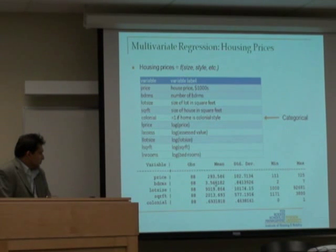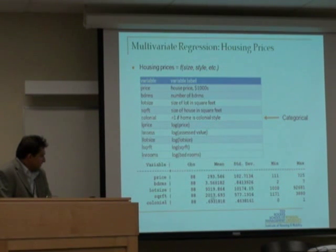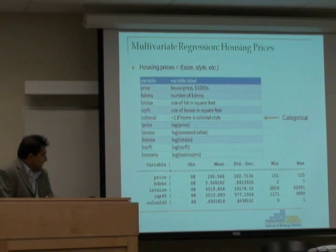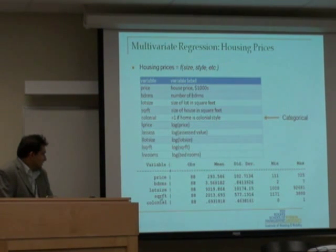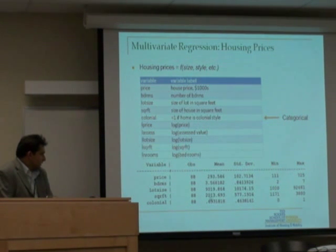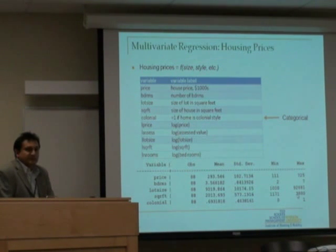The average number of bedrooms is 3.5, the minimum is 2, and the maximum is 7. The average lot size is 9,000 square feet — these are homes in Texas. The minimum lot size is 1,000 and the maximum is 92,000 square feet. The built-up area does not have that much fluctuation: the average is 2,000 square feet, the minimum is 1,100, and the maximum is almost 3,900 square feet.